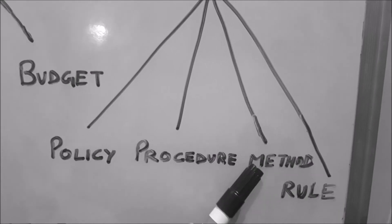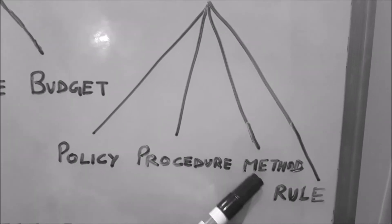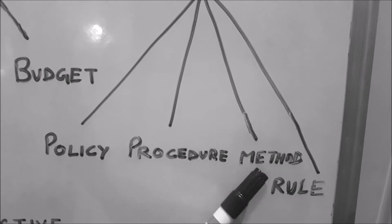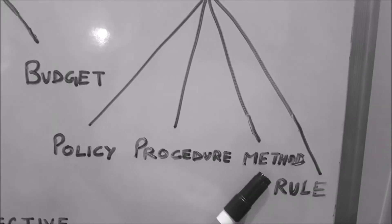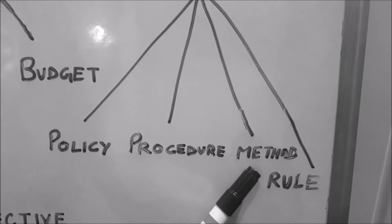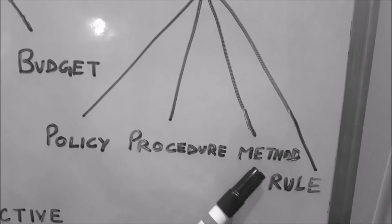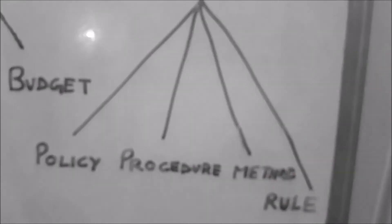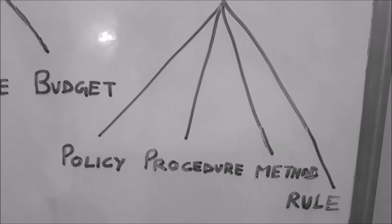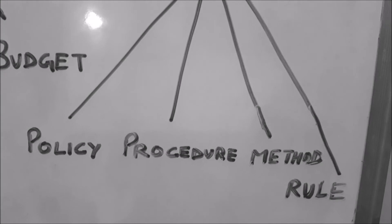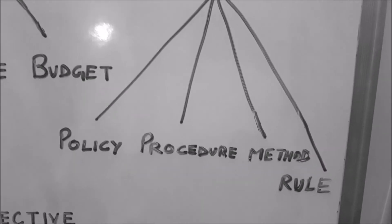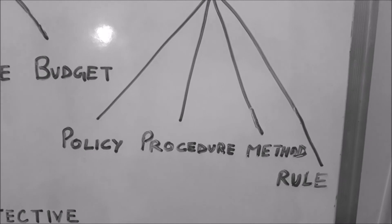The third type of standing plan is method. Methods are the standardized way to perform a task — they are more detailed than procedure, specifying how every step of a procedure will be performed. For example, there can be different methods of giving training to employees: for top-level management, orientation and seminar methods may be used, while for lower-level management, apprenticeship and induction methods are used.